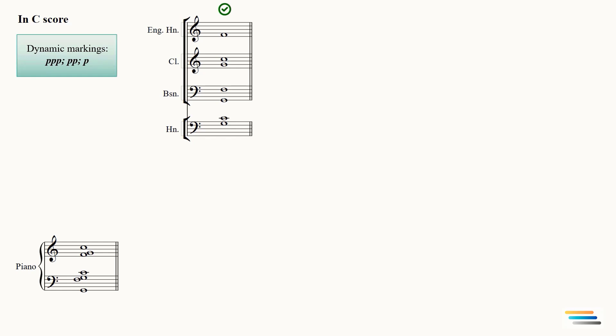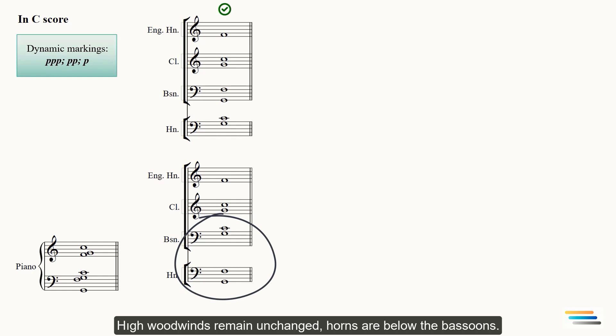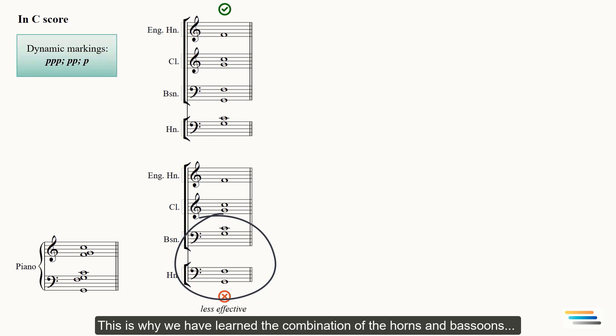What about this voicing? High woodwinds remain unchanged. Horns are below the bassoons. Is this effective voicing or not? Of course not, because the horns will cover the bassoon sound. This is less effective voicing. This is why we have learned the combination of the horns and bassoons in the previous lecture.